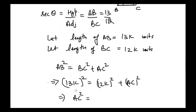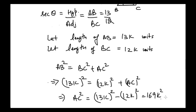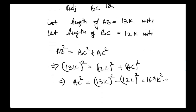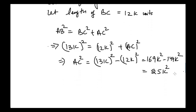From here we get AC squared equal to 13k squared minus 12k squared, which is 169k squared minus 144k squared, giving us 25k squared. So AC squared equals 25k squared, and square rooting both sides we get AC equal to 5k units.